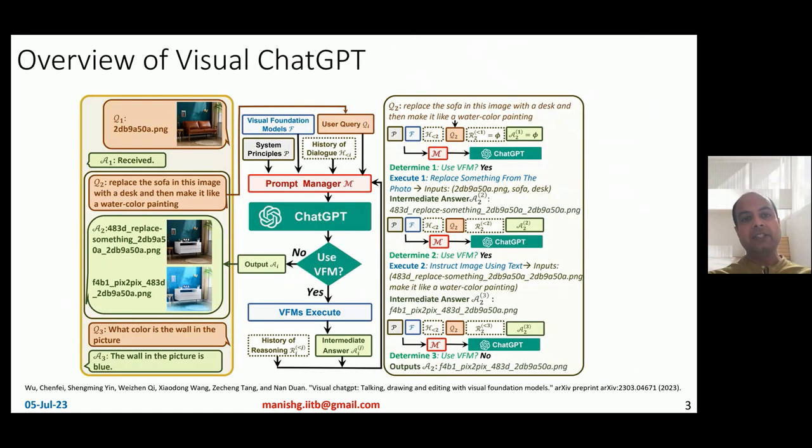This is how the system works. Here is a user query coming in. As soon as the system gets the query, it says received. Then the user may say replace the sofa in this image with a desk and make it like a water painting. The system takes the image, saves it with a unique name, but then when it has to process it, this query has to go to ChatGPT where ChatGPT decides what visual model to use.